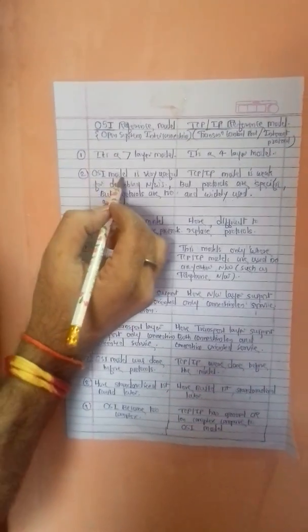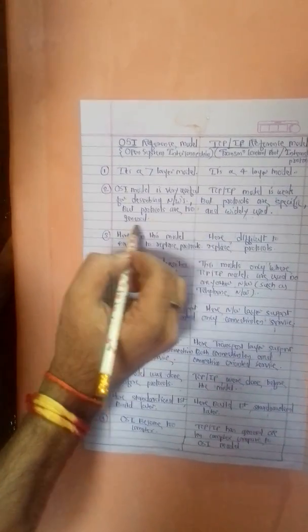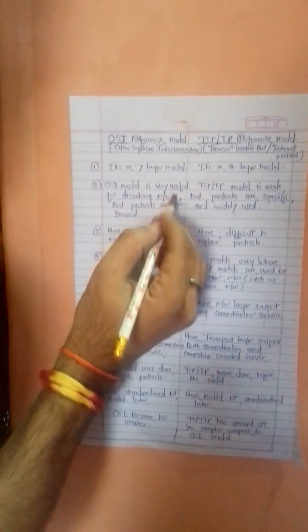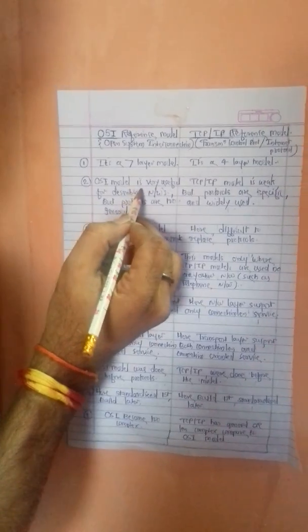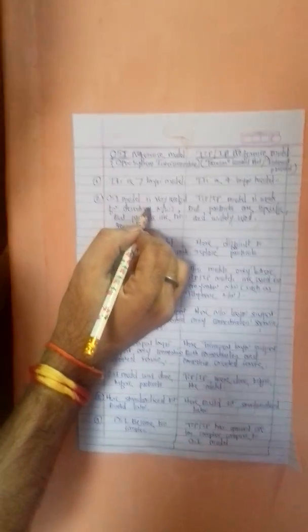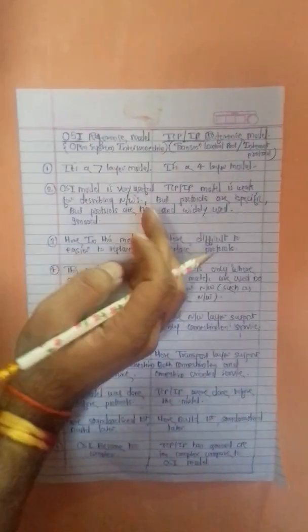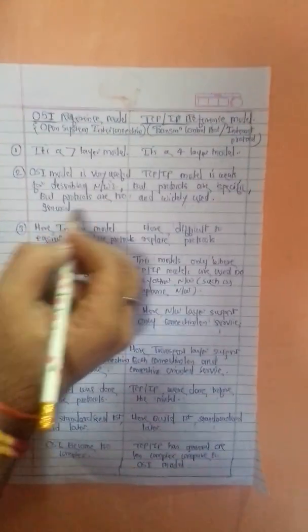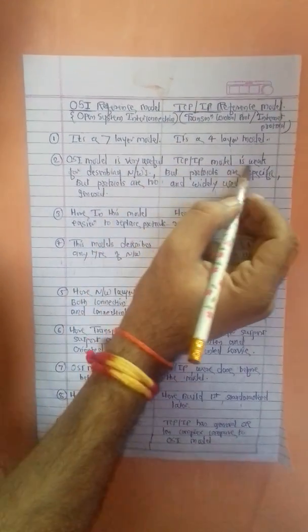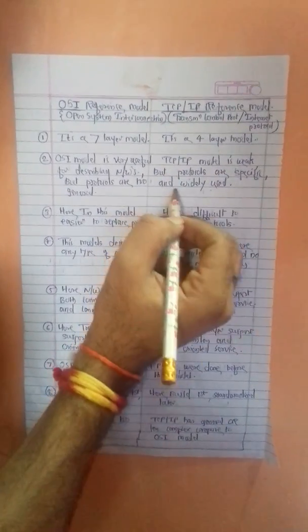The second point is: the OSI model is very useful for describing networks, but its protocols are too general. Protocols in the OSI model are general in nature.